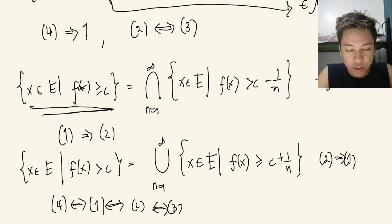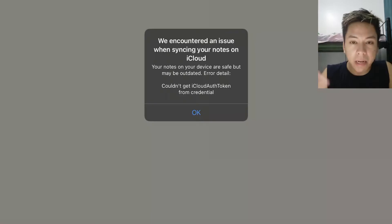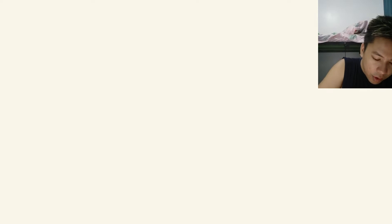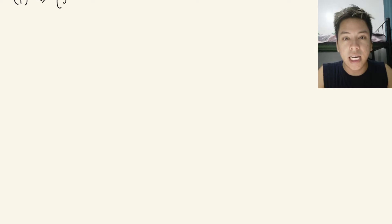Therefore, the four statements in the proposition are equivalent. Now, if I show that 1 implies 5, it means statements 2, 3, and 4 also imply statement 5. Without loss of generality, I'll show only that statement 1 implies statement 5.